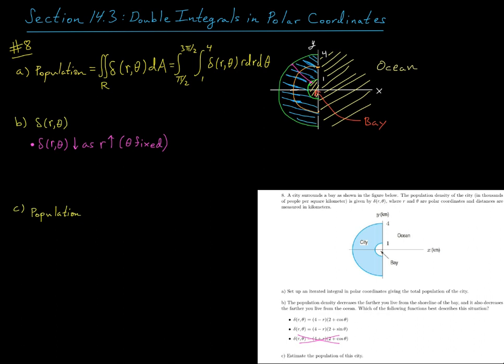Okay, so that can be summarized here as well, density has to decrease as theta ranges from pi over 2 to pi. Again, thinking about r as being a fixed value. And then my density would have to increase as theta goes from pi to 3 pi over 2. Okay, so out of these two options, which one will satisfy these two conditions?